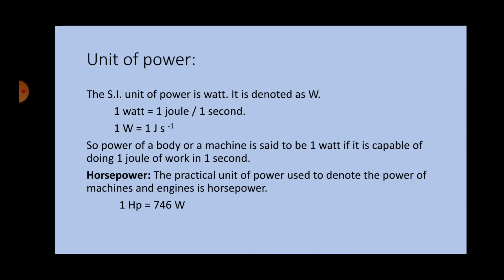The SI unit of power is Watt, denoted as the capital letter W. One Watt equals one Joule per second. So, the power of a body or machine is said to be 1 Watt if it is capable of doing 1 Joule of work in 1 second. Another unit of power is horsepower, which is the practical unit of power used to denote the power of machines and engines. One horsepower is equal to 746 Watt.